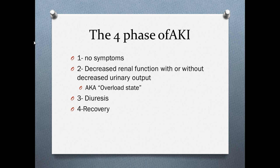Phase one has no symptoms. It runs from the onset of a risk factor to the onset of renal symptoms — so changes in output and changes in BUN and creatinine. The nurse's role in phase one is really to prevent anything further from happening: fix fluid volume deficit, monitor nephrotoxic medications, monitor BUN and creatinine, type and screen before blood transfusions, and for post-renal causes, give medications to relax the bladder neck and remove obstructions.